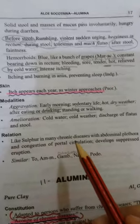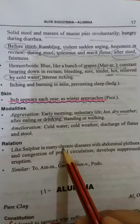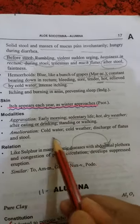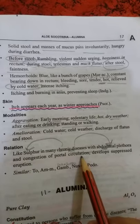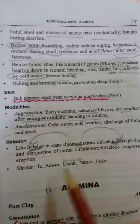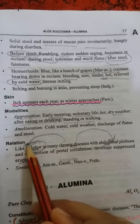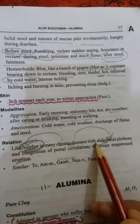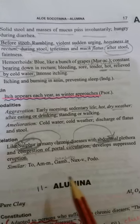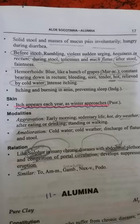Relations: like Sulphur in many chronic diseases — with abdominal plethora, congestion of portal circulation, and suppressed eruptions। Similar to Ammonium Muriaticum, Gamboge, Nux Vomica, and Podophyllum।